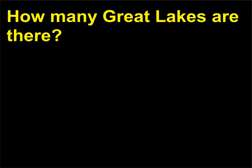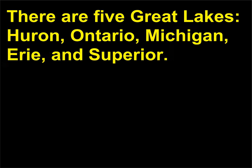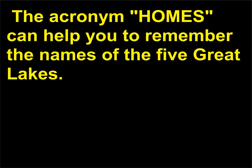How many Great Lakes are there? There are five Great Lakes: Huron, Ontario, Michigan, Erie, and Superior. The acronym HOMES can help you remember the names of the five Great Lakes. All of the lakes except Michigan lie on the U.S.-Canada border.